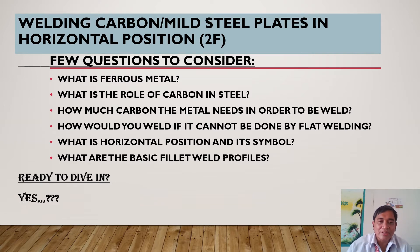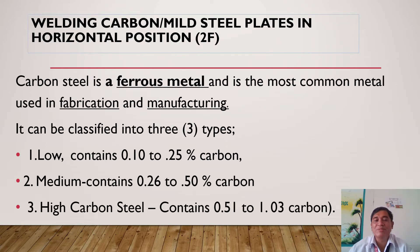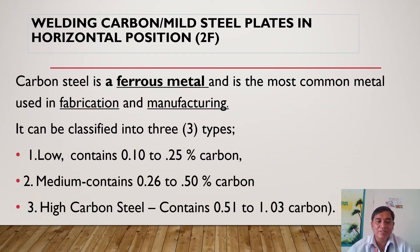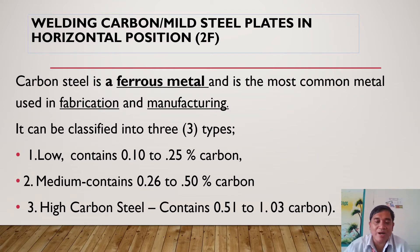Carbon steel is a ferrous metal and it's the most common metal used in fabrication and manufacturing. You remember the symbol for iron — Fe — ferrous metal. So steel is a combination of carbon and iron. We have three classifications of carbon steel: first, low carbon steel contains 0.1 to 0.25% carbon; medium carbon steel contains 0.26 to 0.5% carbon; and high carbon steel contains 0.51 to 1.03% carbon.